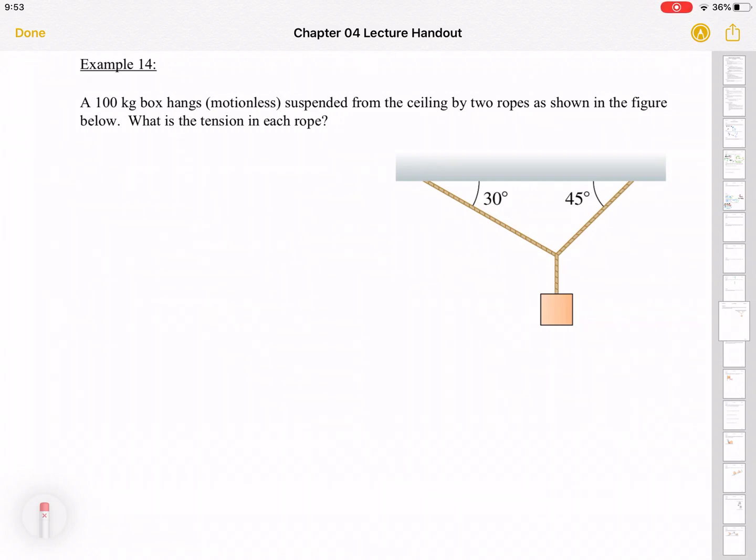So let's look at a situation where we apply Newton's second law. Here we have a 100 kilogram box suspended from the ceiling by two ropes hanging at different angles. The question is, what's the tension in each rope? So let's identify what are we looking for. Tension, specifically this tension and this tension. We could call them T1 and T2.